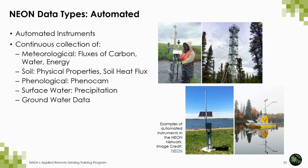The data collected by the automated instrument systems are standardized, but the systems do vary from site to site. At each of the terrestrial sites there is a micrometeorological tower, a soil sensor array, precipitation gauges, and two PhenoCams — and we'll talk about PhenoCams later. At the aquatic sites there are surface water quality and depth measurements, groundwater, precipitation, as well as PhenoCam data.